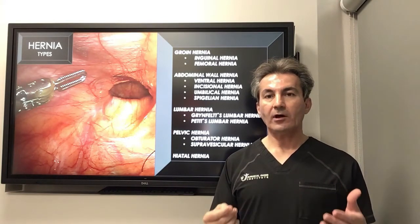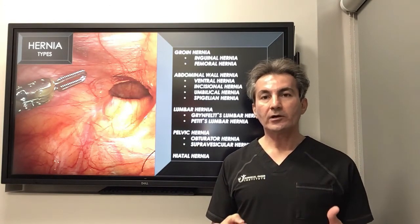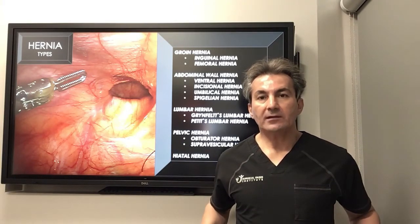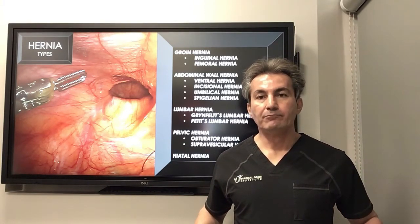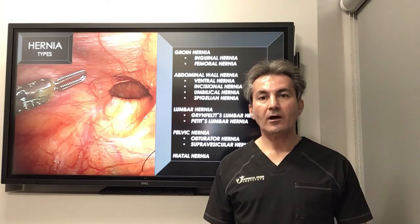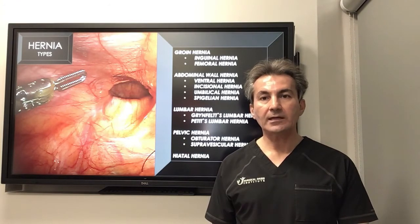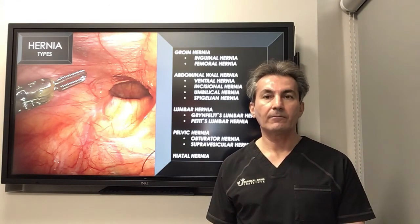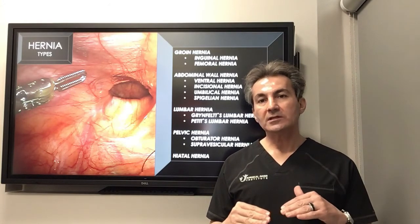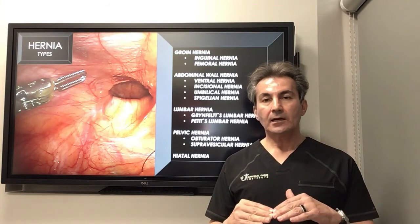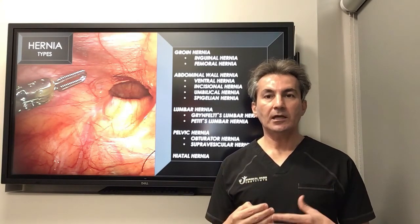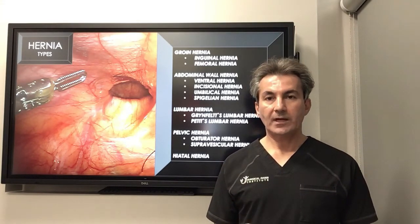When we talk about groin hernia, we have to identify the inguinal ligament. The inguinal ligament is the fibrous band or ligament that connects the bone of your hip area anteriorly to the bone of the pubis area, right in the center in the front of the abdomen. A hernia or defect of the muscle located above that inguinal ligament is called an inguinal hernia.